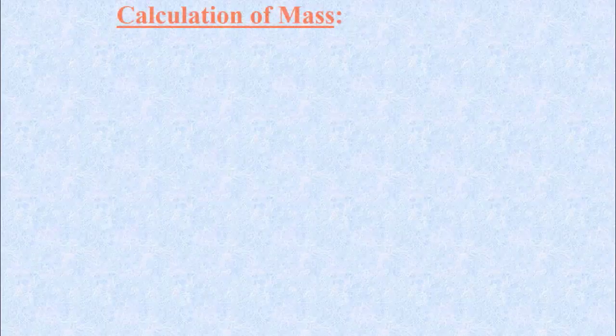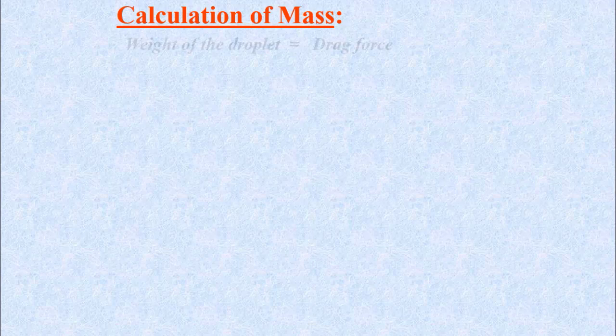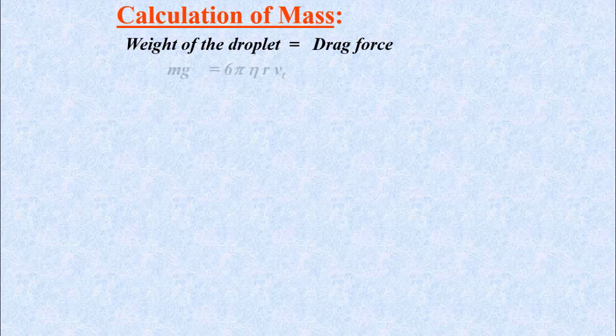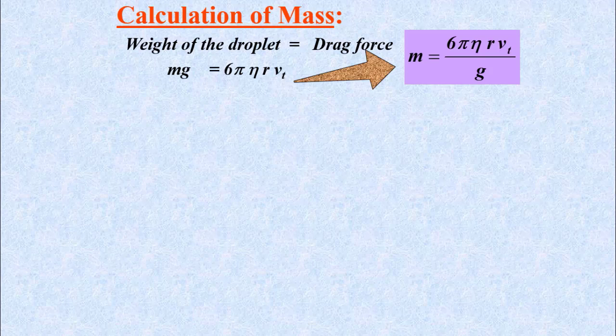For mass calculation, we will study the charged droplet falling with terminal velocity. In this condition, the drag force and the weight of the droplet become equal to each other. By putting the values, we get m g is equal to 6 pi eta r v_t. By this equation, mass can be calculated if we know coefficient of viscosity for air, radius of the droplet, terminal velocity, and g.